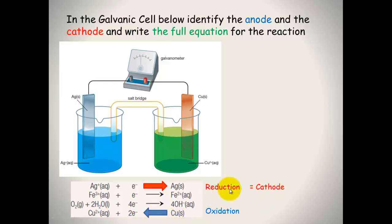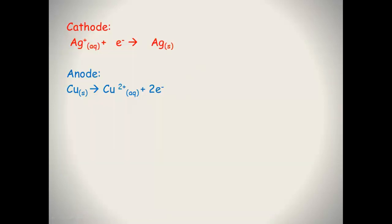Reduction always occurs at the cathode — remember OIL RIG CAT — and oxidation occurs at the anode. So the cathode reaction is silver ions plus one electron makes silver solid. Our anode is copper solid.